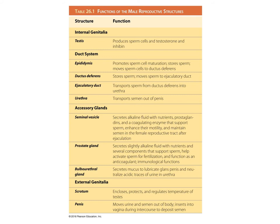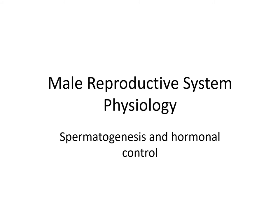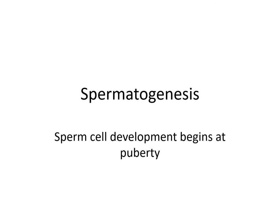Now let's look at the male reproductive system physiology. We're going to begin with spermatogenesis and hormonal control. In lab, you talked about meiosis, and we're going to limit our discussion to spermatogenesis — if you need to review meiosis, you should do that. Spermatogenesis is sperm cell development, which begins at puberty.